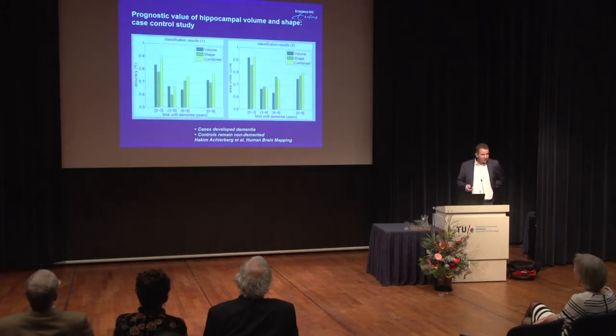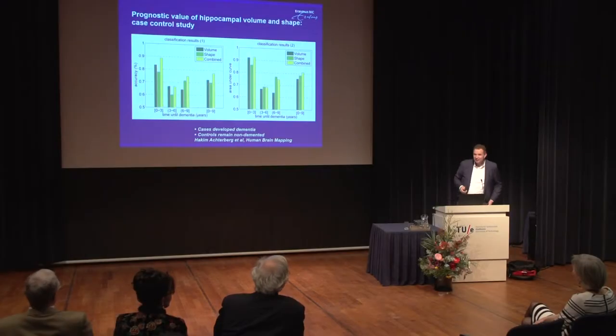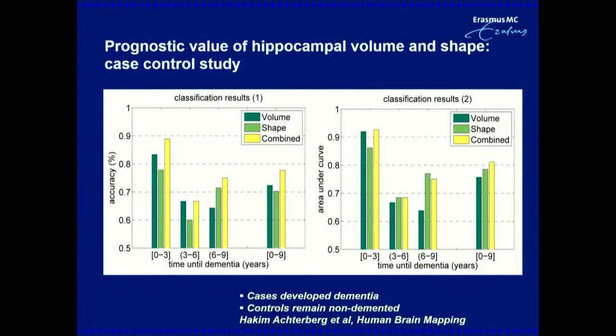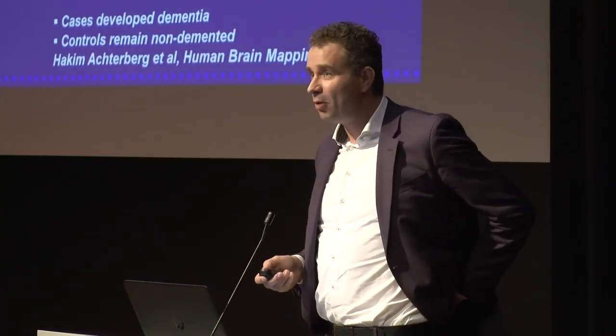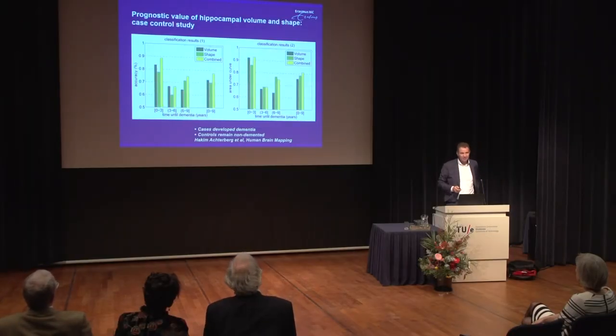We can go a step further. Hakim Achterberg — who came from Yale to Rotterdam — looked at the prognostic value of hippocampal volume and shape for people who developed dementia in the Rotterdam study. We're not close yet to doing prognostics based solely on an MRI scan, but we can really see there's quite some information in quantifying aspects of the brain to stratify for risk of getting dementia. Even pharmaceutical companies are already very interested in these results to select patients to be included in clinical trials.